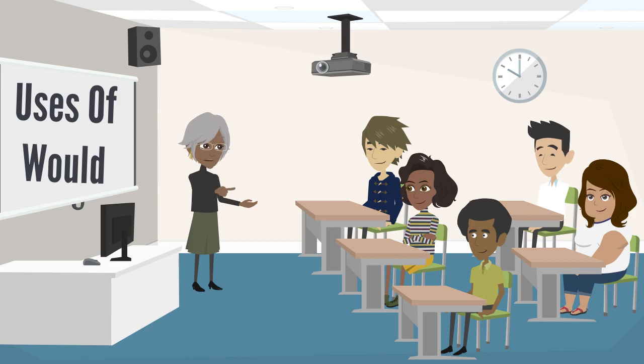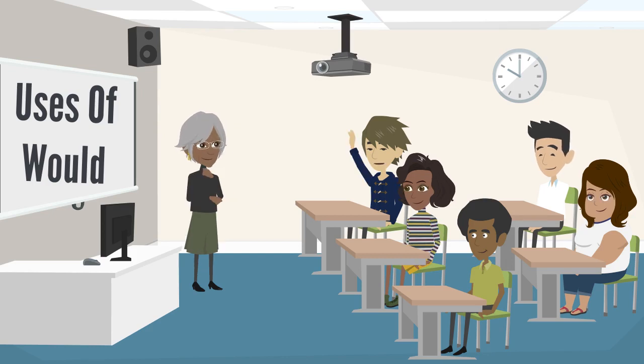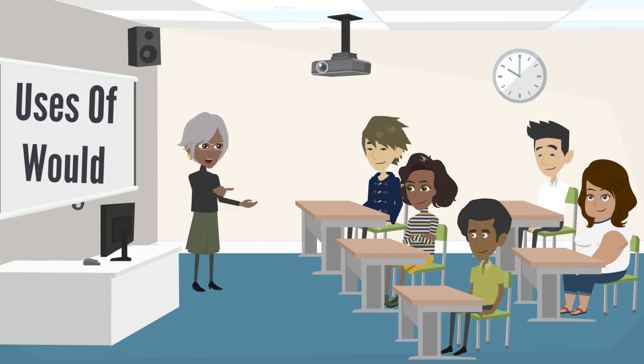Person B uses would to indicate their preference or inclination. They express their desire to watch a romantic comedy instead of an action thriller. Can anyone provide another example of expressing preference using would? I would prefer pizza for dinner tonight. Excellent choice. You're doing great.